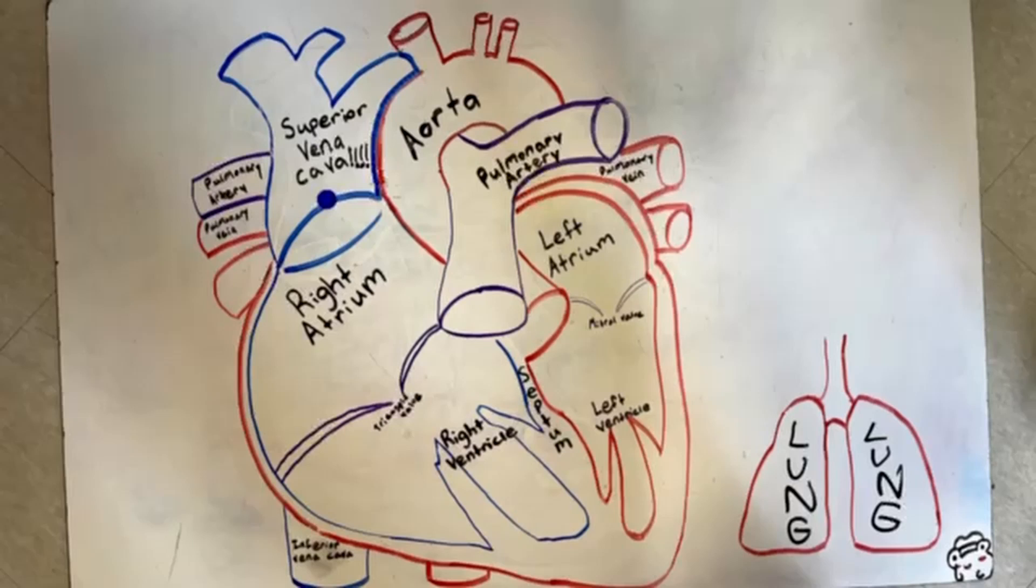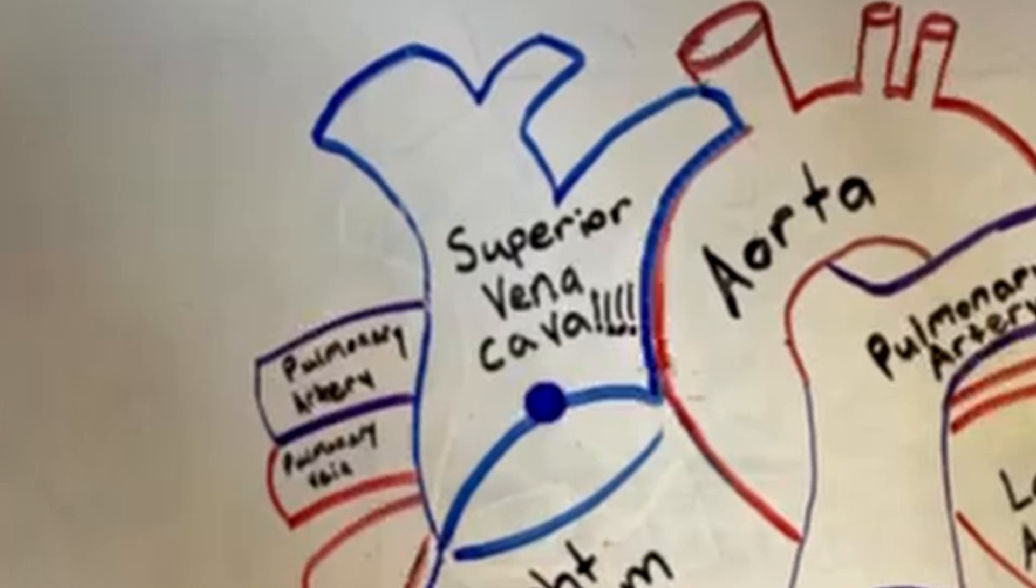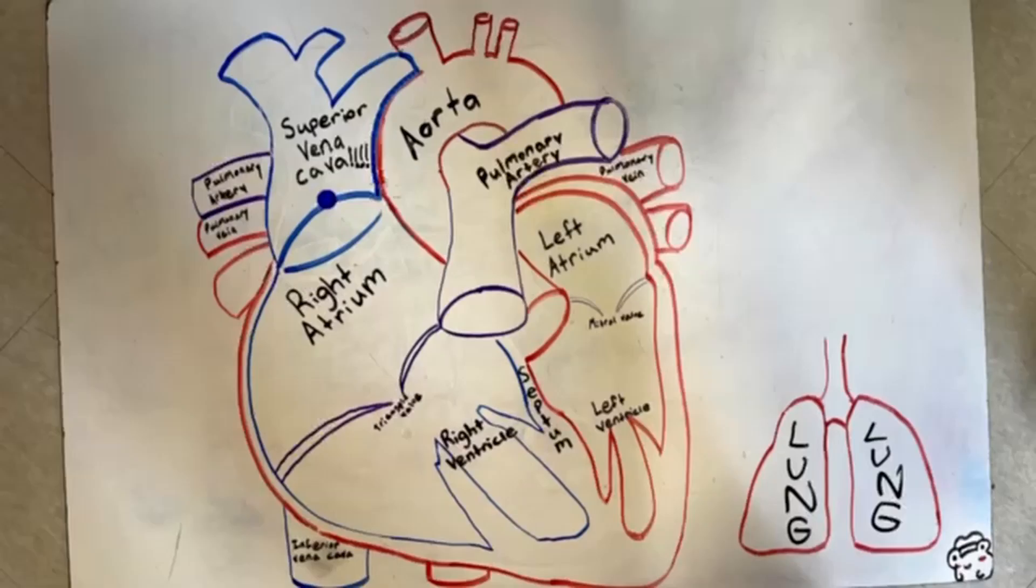So this whole process starts in the superior vena cava, not the inferior vena cava, because it's superior. It's always right. That's why it pushes blood to the right atrium.